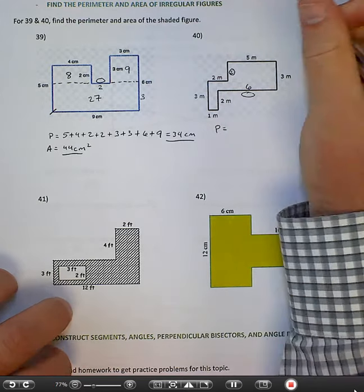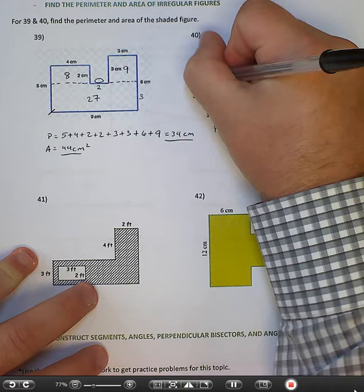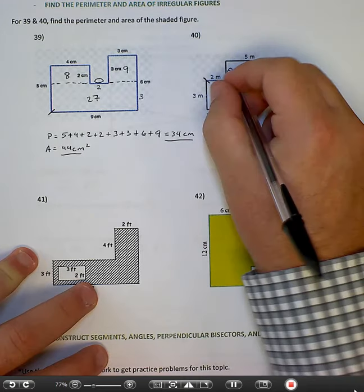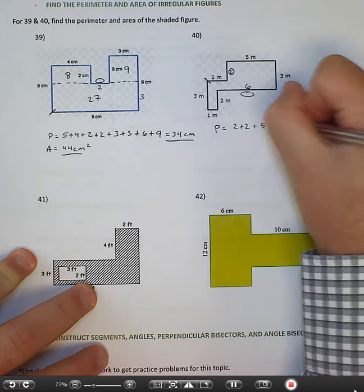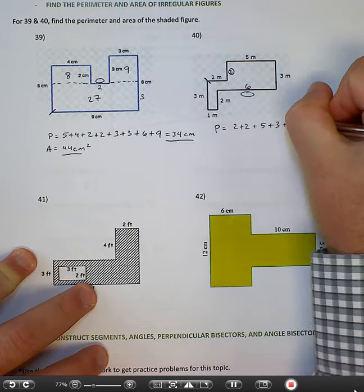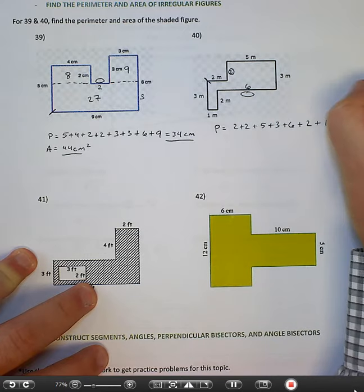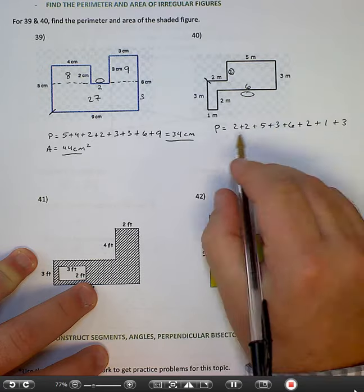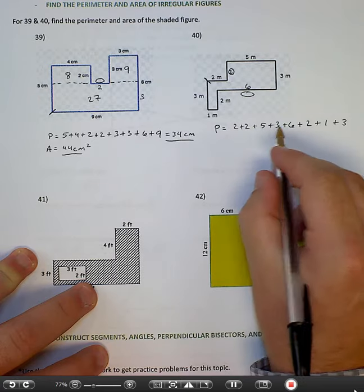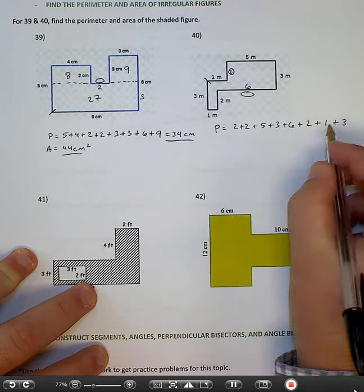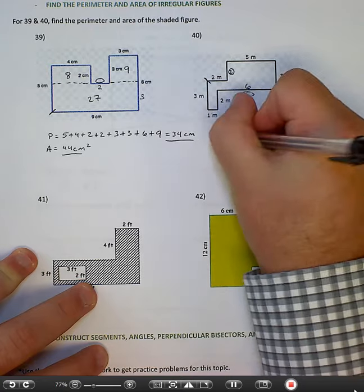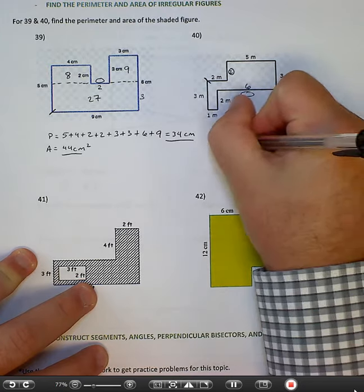So the perimeter is just, I'm going to start right here. 2 plus 2, plus 5, plus 3, plus 6, plus 2, plus 1, plus 3. So 4, 9, 12, 18, 20, 21, 24. 24 meters is the perimeter.